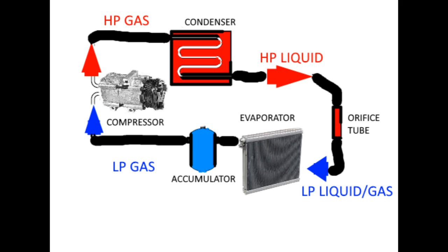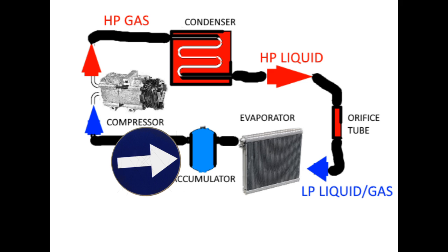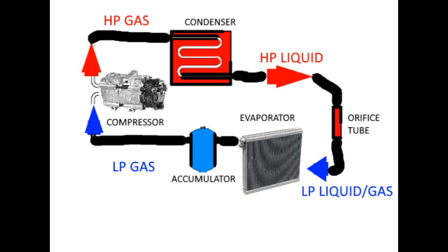Next after the evaporator is the accumulator, which has two purposes. First, there's desiccant in the accumulator to draw any moisture that may have entered the system when it was charged — no water moisture should be in this system. Second, the accumulator holds AC volume but also prevents liquid from getting into the compressor. It's basically just an aluminum can, and only gas can enter the compressor. The accumulator has an opening at the top — liquids sit on the bottom, hopefully evaporate into gas, and then go back into your compressor.